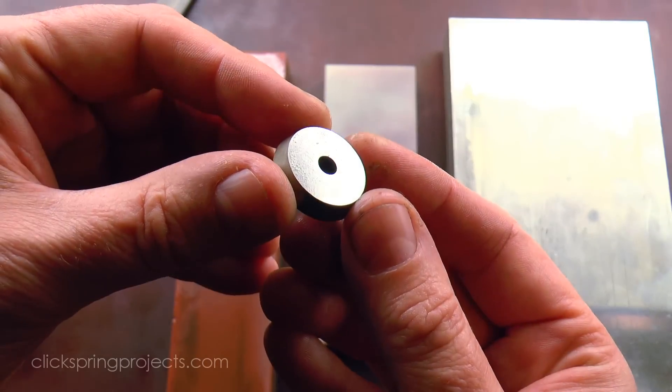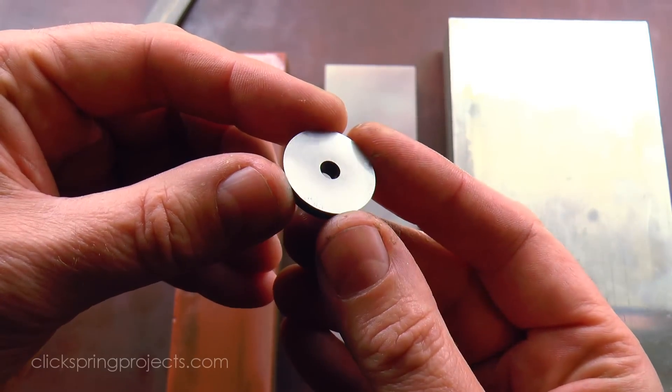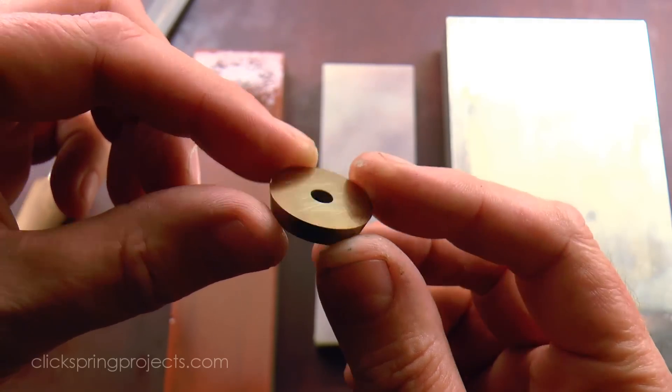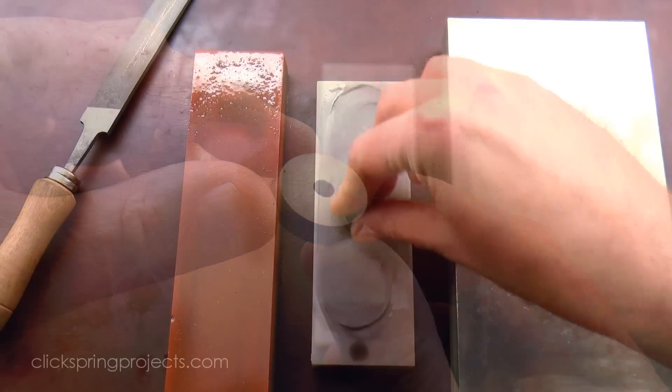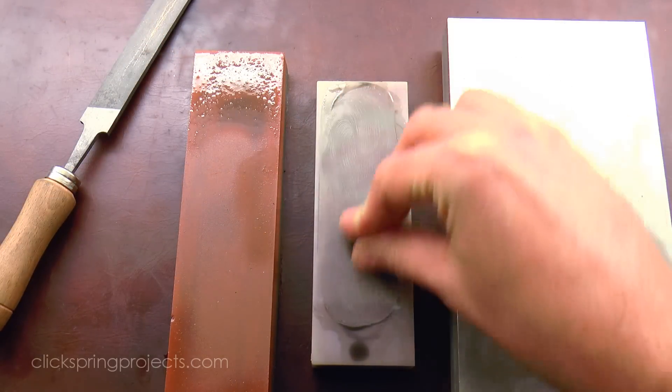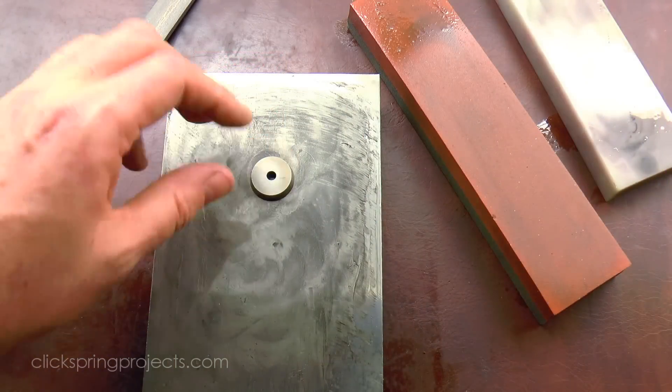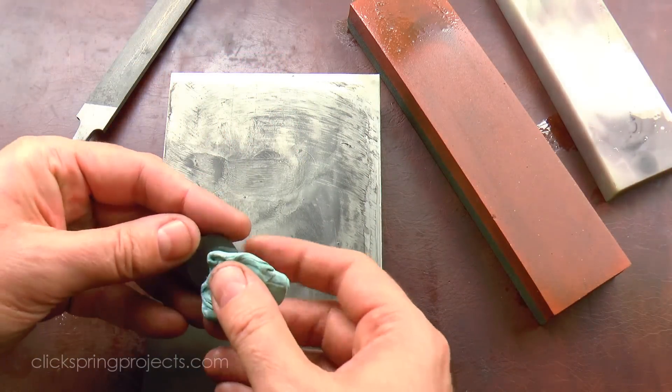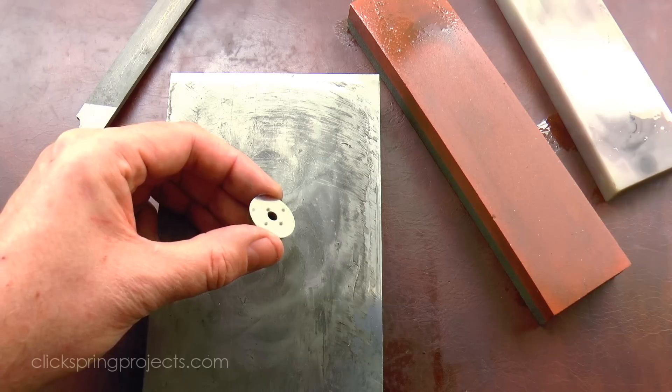After quench hardening and then tempering, it's still relatively easy to bring up the cutting edge by hand using the same abrasive stones that we've been using so far in the previous examples.